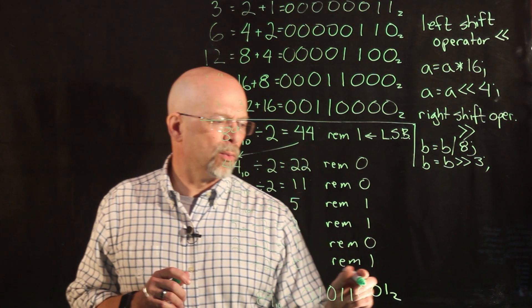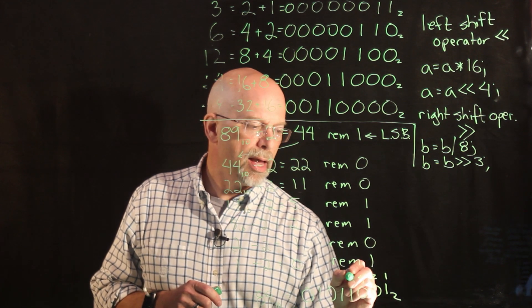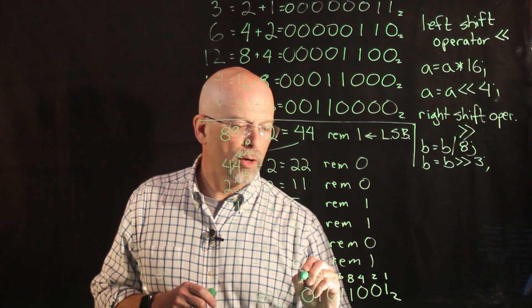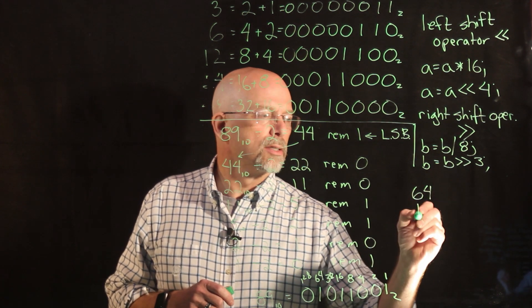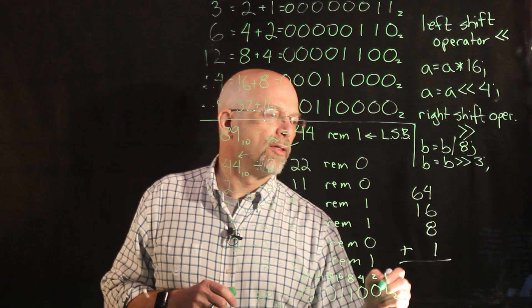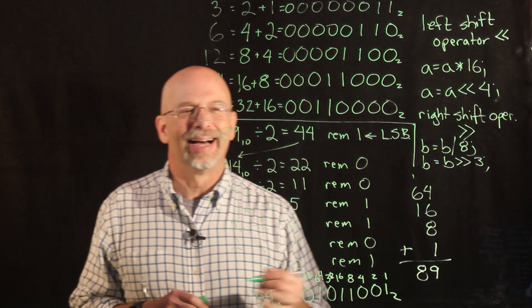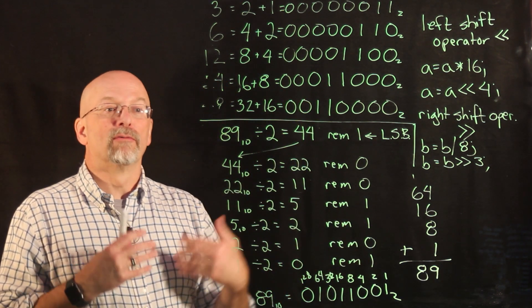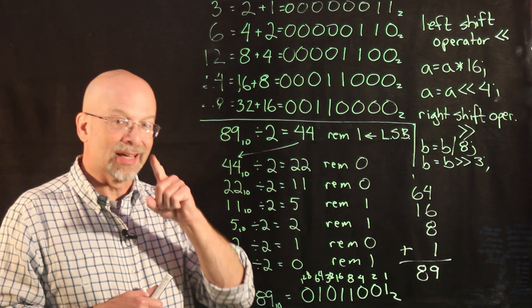Did we get the right answer? Well, let's do the conversion. This is the 1's place, the 2's place, 4, 8, 16, 32, 64, 128. So this becomes 64 plus 16 plus 8 plus 1. Add all those together, we get 89. And there you go. Quick and easy way in order to do a conversion from decimal to binary using only divisions by 2, keeping track of the remainders.